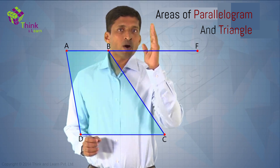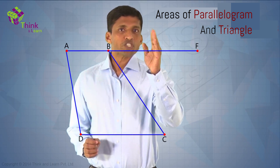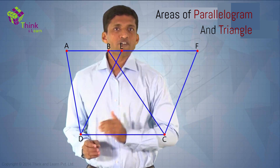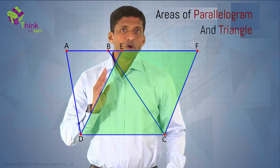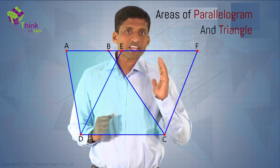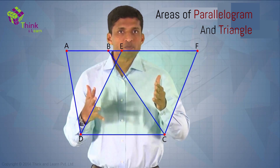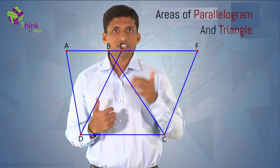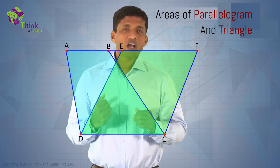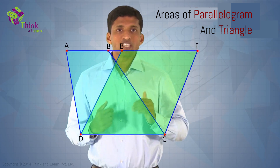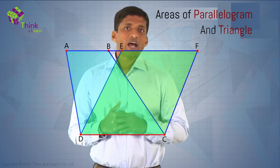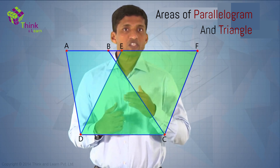Now take one more point E and join E, F, C, D — which is a parallelogram. So ABCD is a trapezium and EFCD is a parallelogram in this particular scenario. Both these figures are on the same base CD, and they are between the same parallels.